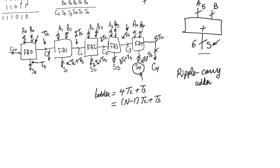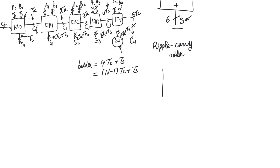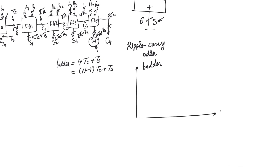So this adder, which is called the ripple carry adder, is the simplest adder we can ever design. And it's obvious that this is pretty simple because it mimics everything that we do in long addition — it doesn't do anything interesting or new. And if we look at how its delay behaves, its delay is actually pretty good for a small input where n is small. But it starts to increase really fast, and it increases linearly. So at n equals 1, the delay of this adder is TS, because we are just using a single full adder. And the delay of the full adder is obviously TS.